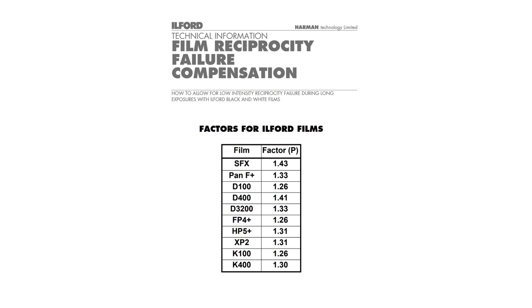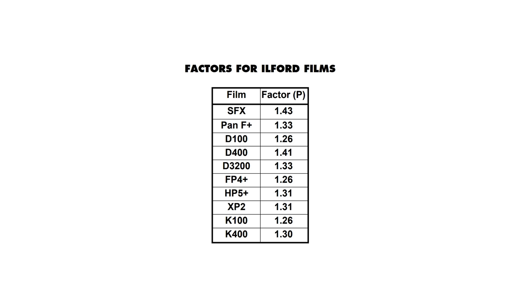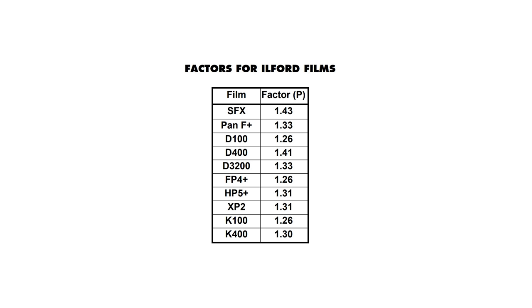Ugh, this already sounds exhausting. Is there just an easy way to deal with this? Yes. The way that I stay so cool, calm, and collected in the face of total reciprocity failure is by using something called the reciprocity factor, or the P-factor. Most popular film stocks have a P-factor readily available online. The P-factor is basically just an exponential value that you plug into your shutter time.